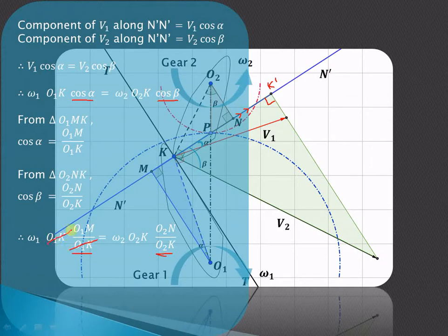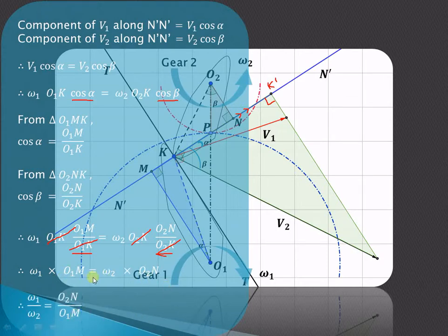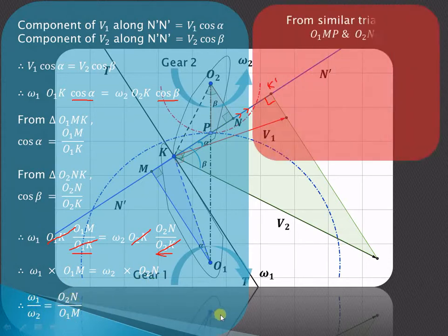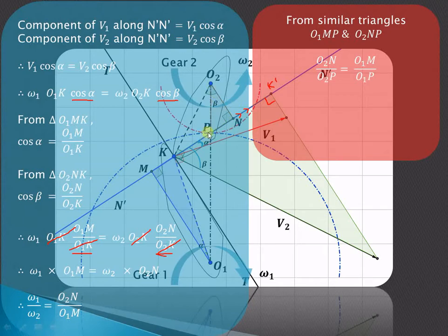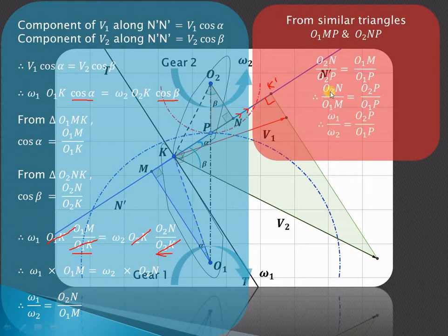Substituting and cancelling O1K from the left side and O2K from the right side, we are left with omega 1 · O1M = omega 2 · O2N, which gives the angular velocity ratio omega 1 / omega 2 = O2N / O1M. From the similar triangles O1MP and O2NP, we find O2N / O1M = O2P / O1P, therefore omega 1 / omega 2 = O2P / O1P.